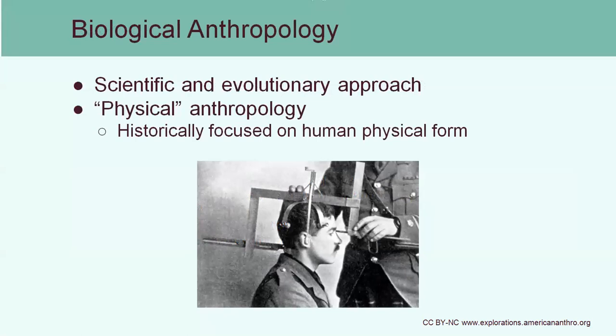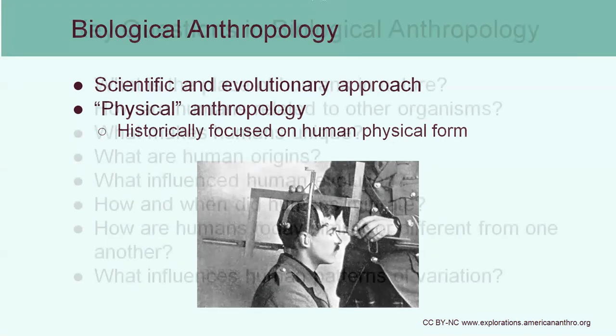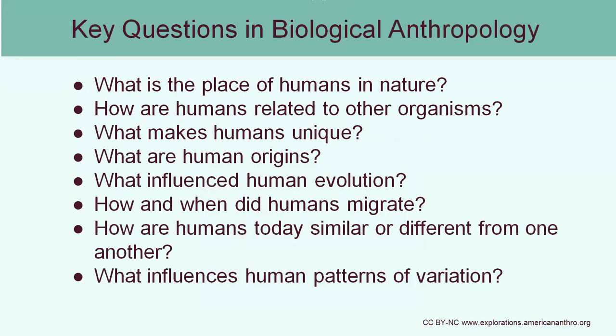Now let's look more at biological anthropology. The idea is to use a scientific and evolutionary approach to look at how humans have evolved and basically look the way that they do now. So why do we have our physical differences as well as our physical similarities? Questions include: What is the place of humans in nature? How are humans related to other organisms? What makes humans unique? What are human origins? What influenced human evolution? How and when did humans migrate? We can use the fossil record to see how humans ended up all over the world. How are humans today similar or different from one another, and what influences human patterns of variation?